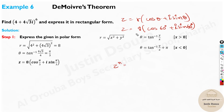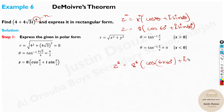The formula is: Z to the power N, R to the N, cos N times theta plus i sine N times theta. What is N? N is 6. So now we substitute: Z to the power 6, then 8 to the power 6, cos 6 times 60 degrees, plus i sine 6 times 60 degrees. Multiply 6 by 60 degrees. This is how we substitute the formula.